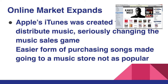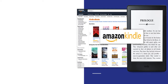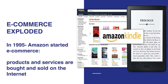The increased distribution that has come with the Internet has also led the online market to expand. Apple's iTunes was created to distribute music, seriously changing the music sales game. This easier form of purchasing songs made going to a music store not as popular as before, because we can do it from the comfort of our own mobile devices. Similarly, e-commerce exploded in 1995 when Amazon became a large distributor of items. Amazon started e-commerce, which can be defined as products and services that are bought and sold on the Internet.